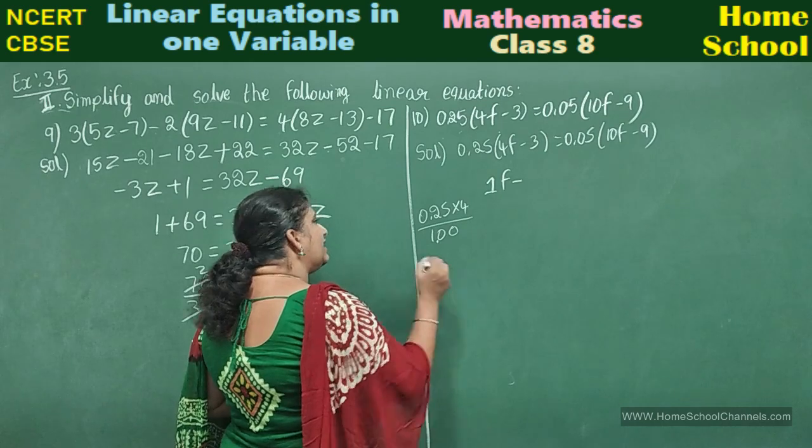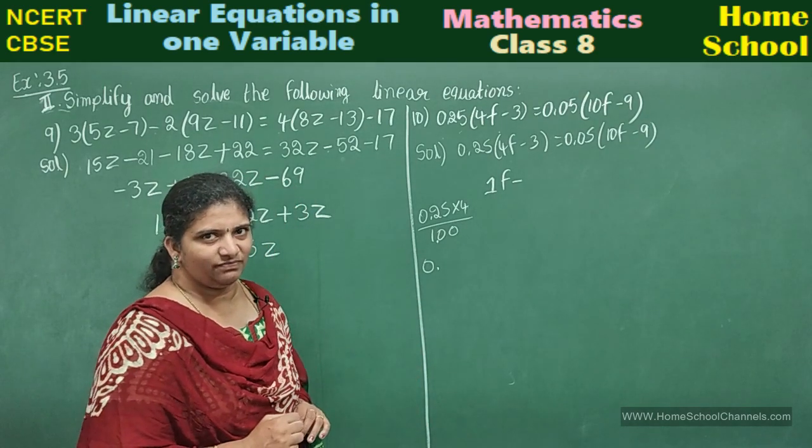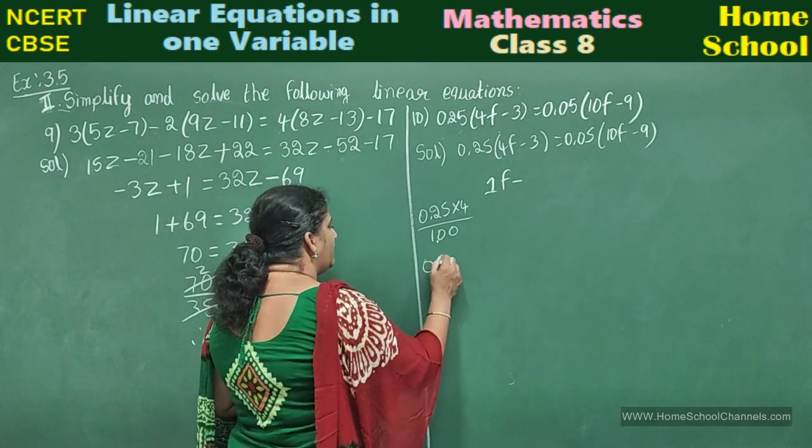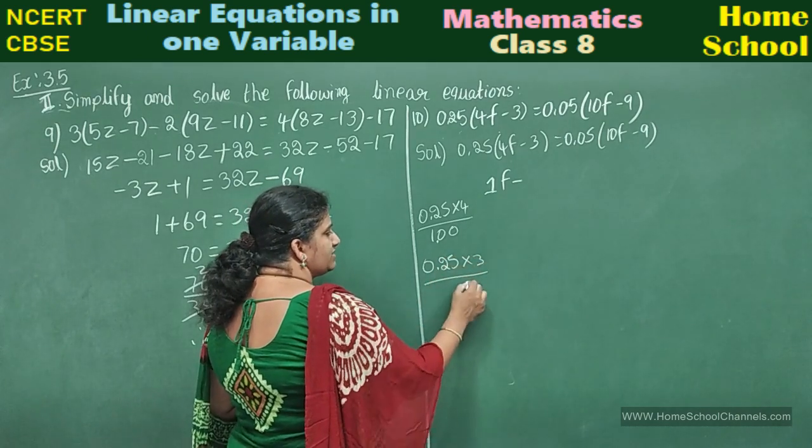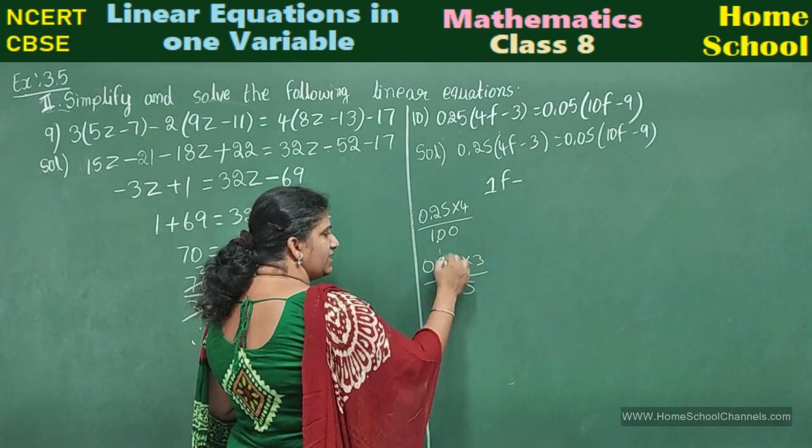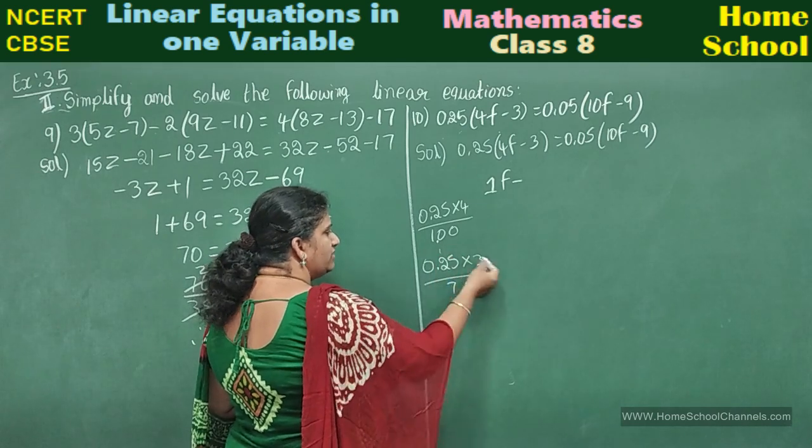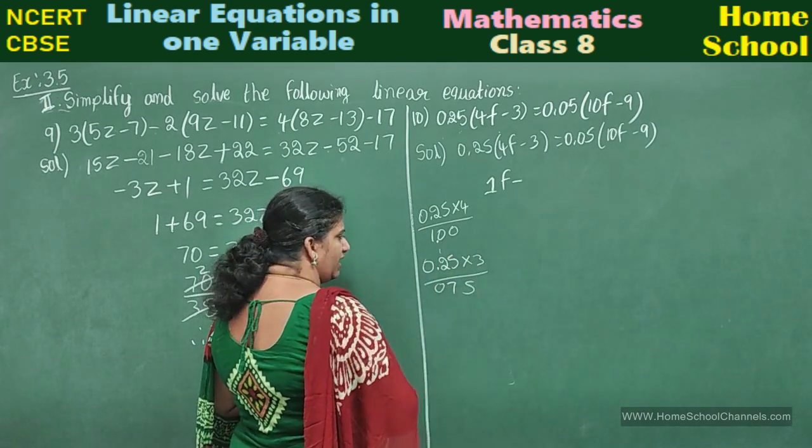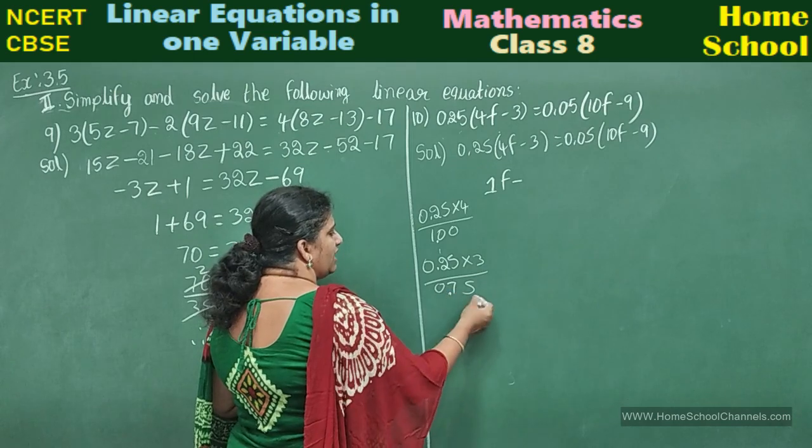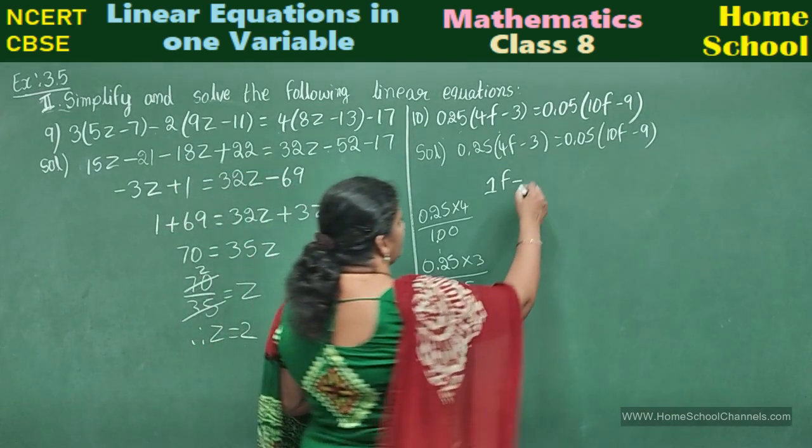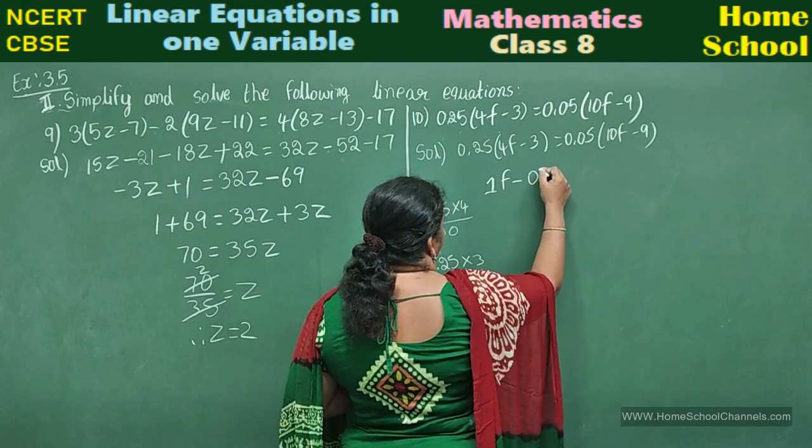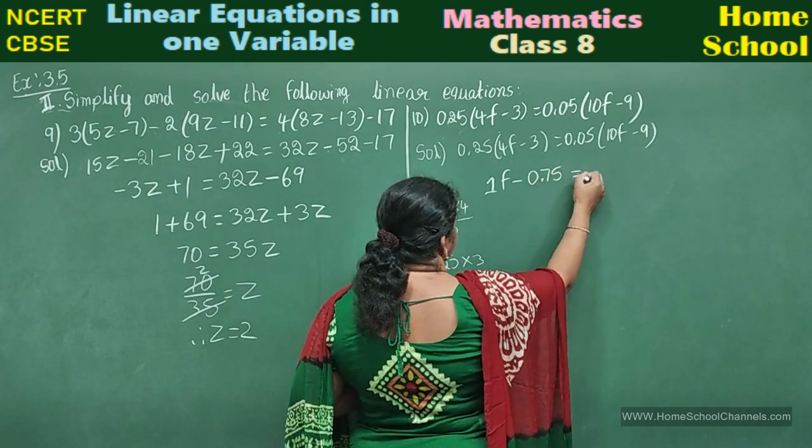If you want, you can multiply 0.25 into 3: 3 fives are 15, 3 twos are 6, 6 plus 1 is 7, 3 zeros are 0 you can write. And after 2 digits put the decimal point: 0.75. Minus 0.75 equals.